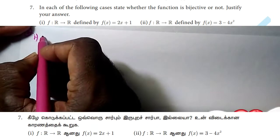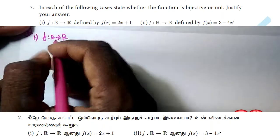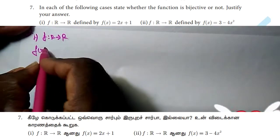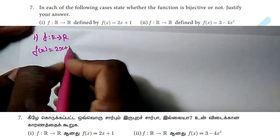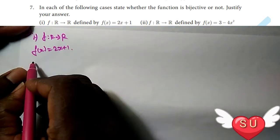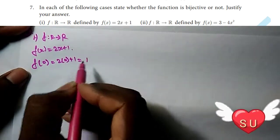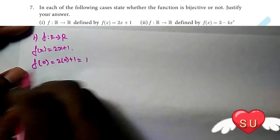For the first function, f: ℝ → ℝ defined by f(x) = 2x + 1. Let's test some values. For x = 0, f(0) = 2(0) + 1 = 1. For x = 1, f(1) = 2(1) + 1 = 3.